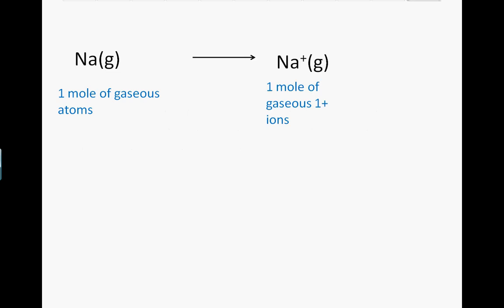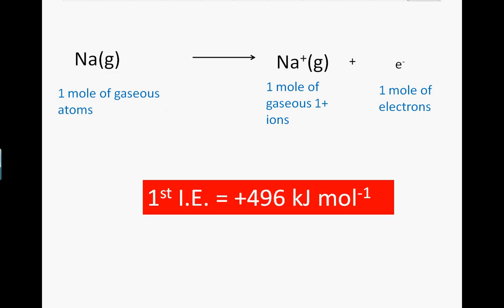We'll go to one mole of gaseous 1 plus sodium ions, and we will remove one mole of electrons. The energy to actually do this, to remove one mole of electrons from one mole of gaseous sodium atoms, will be plus 496 kilojoules per mole. That's 496 kilojoules for every mole of sodium atoms.